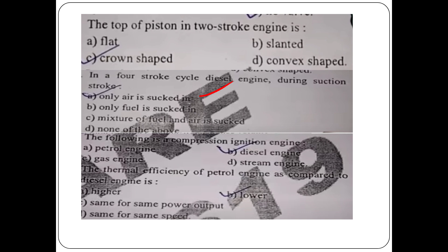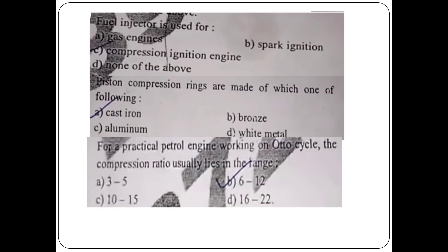The following is the compression ignition engine — what is the diesel engine? The thermal efficiency of the petrol engine as compared to the diesel engine is lower.